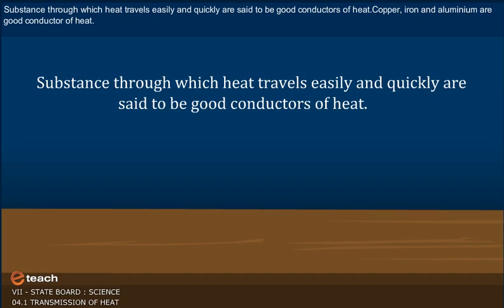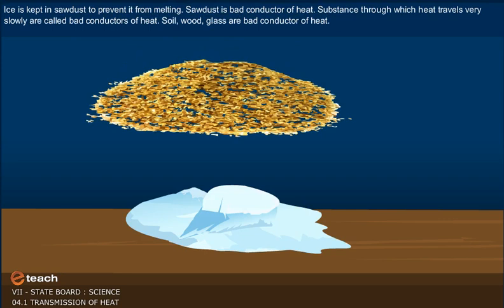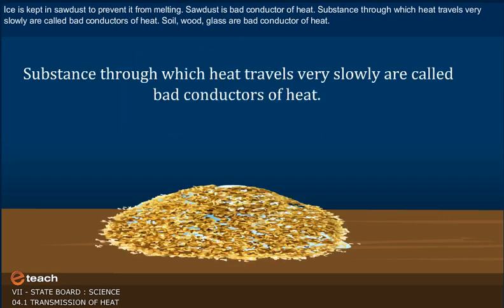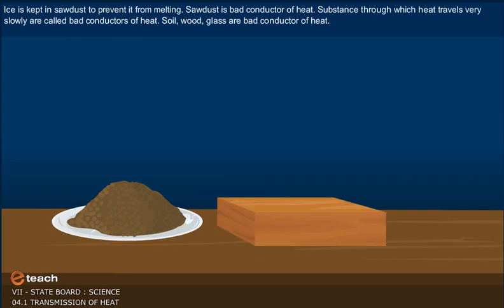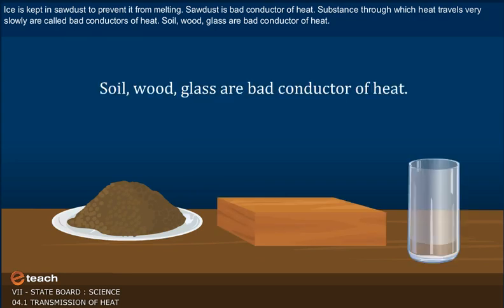Substances through which heat travels easily and quickly are said to be the good conductors of heat. Copper, iron and aluminium are good conductors of heat. Ice is kept in sawdust to prevent it from melting. Sawdust is a bad conductor of heat. Substances through which heat travels very slowly are called bad conductors of heat. Soil, wood, glass are bad conductors of heat.